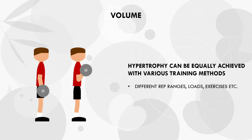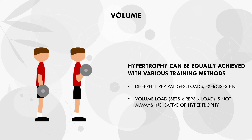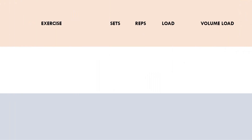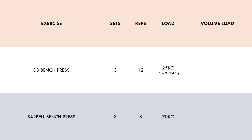This means that the classic form of quantifying volume — volume load, or total tonnage — is not a very accurate way to calculate and compare training volume for hypertrophy. Volume load uses the metric of sets times reps times load of each exercise, which isn't necessarily indicative of the hypertrophic stimulus. For example, let's compare the volume load of two different exercises. Let's say a trainee performs 3 sets of 12 with 25 kilos in each hand for the dumbbell bench press, and in another session performs 3 sets of 8 with 70 kilos for the barbell bench press. While both protocols would probably achieve very similar hypertrophy outcomes, the volume load between exercises would be quite drastically different.